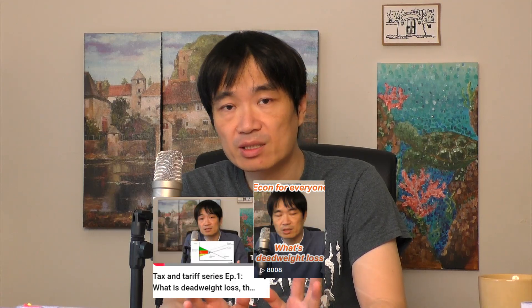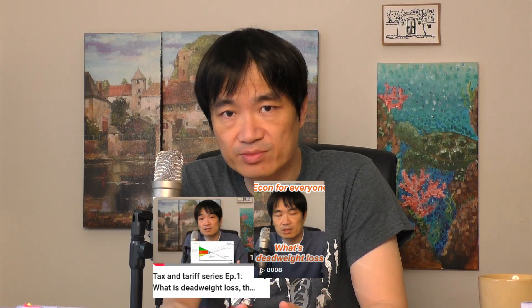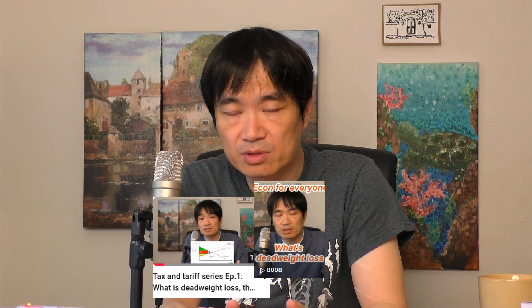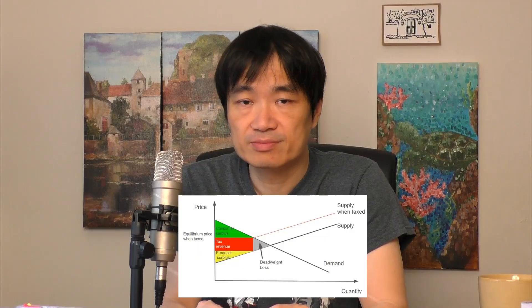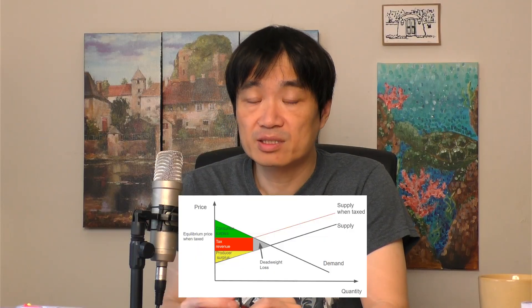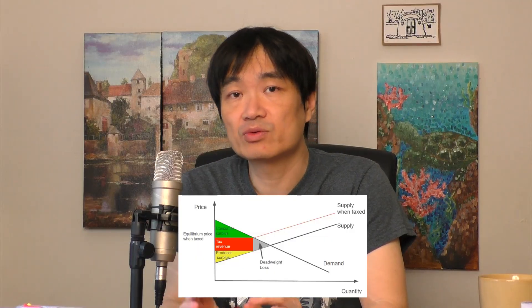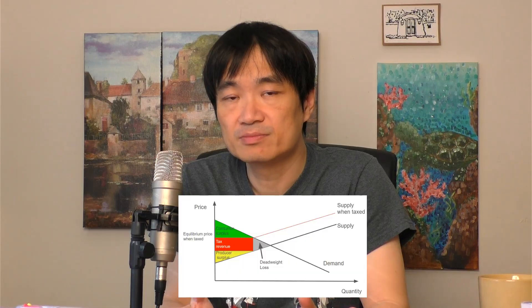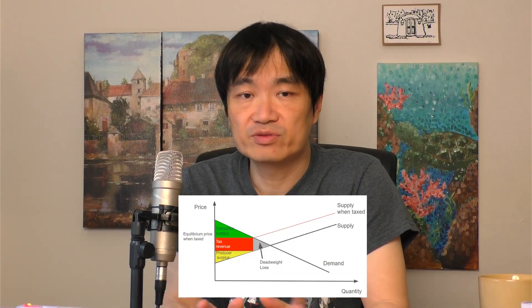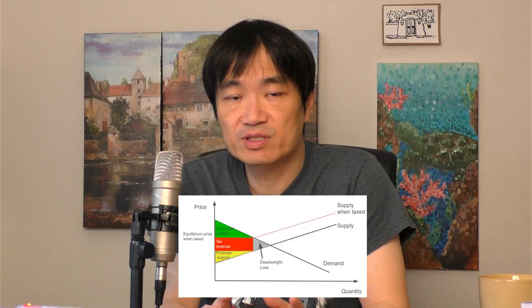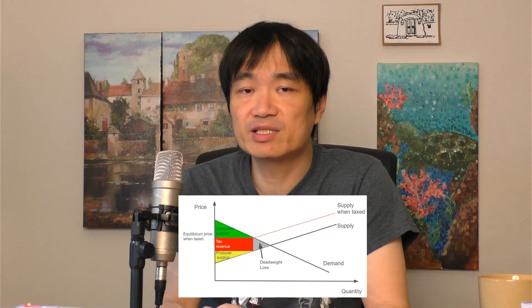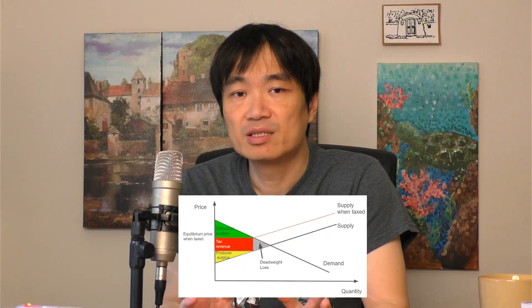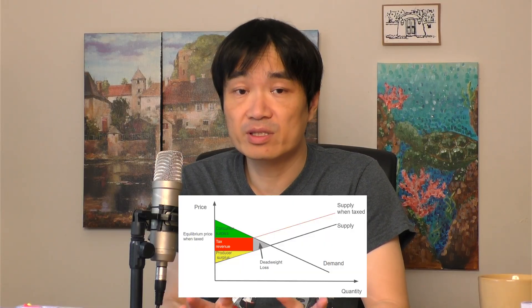I talked about the deadweight loss concept a few days ago, which is where the idea of fiscal conservatism comes from, because this concept explains why taxes can shrink the size of the economy. But anyone who's patient enough to sit through the first few weeks of any econ class will know that this model is very limited.